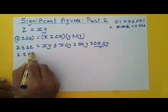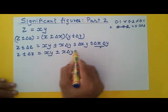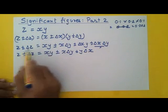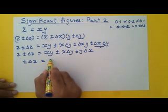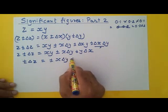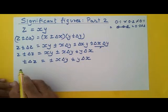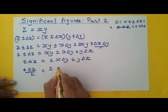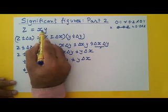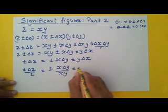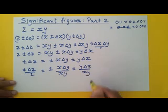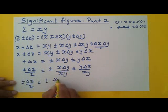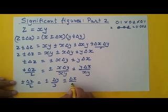Therefore, the equation becomes: Z plus minus delta Z equals X·Y plus minus X·delta Y plus minus Y·delta X. Since Z equals X·Y, those terms cancel, giving plus minus delta Z equals plus minus X·delta Y plus minus Y·delta X. Dividing throughout by Z, and substituting Z equals X·Y, the X and Y terms cancel to give plus minus delta Z upon Z equals plus minus delta Y upon Y plus minus delta X upon X.